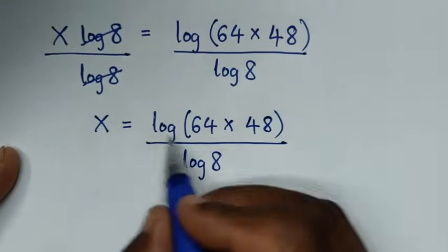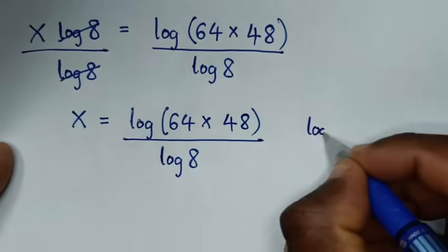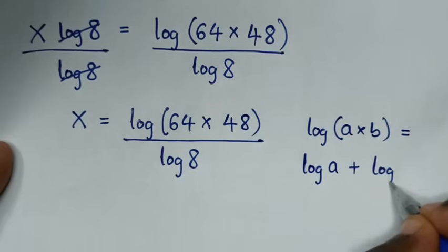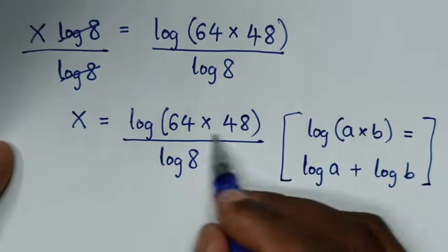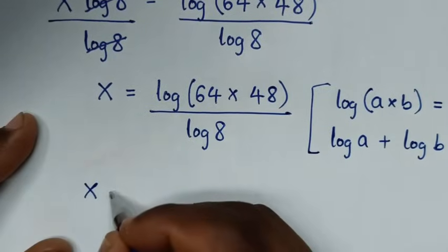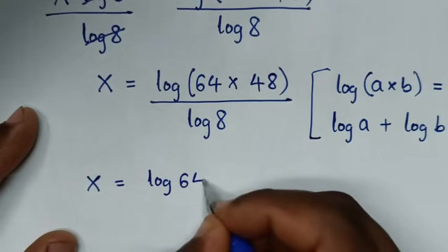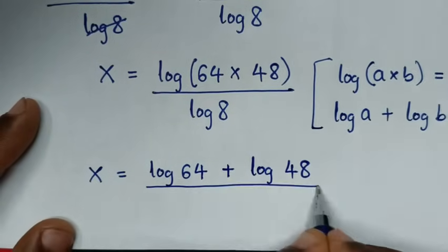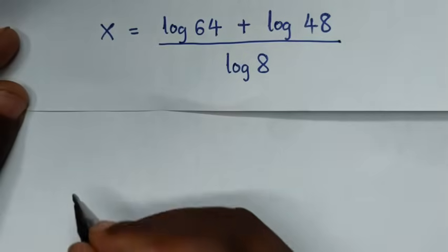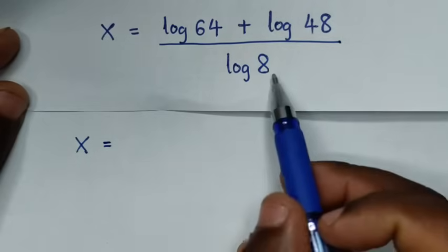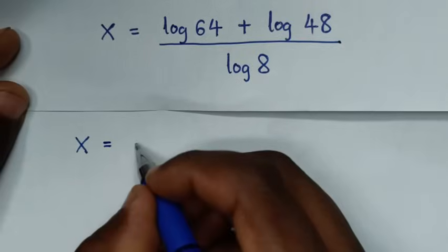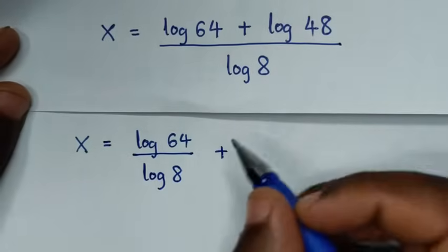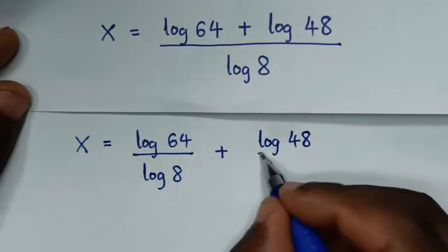In the next step, this part here is in the form of log of a times b, which is equal to log of a plus log of b. So applying this rule, it will be x is equal to log of 64 plus log of 48, all over log of 8. Then dividing each term: log of 64 over log of 8 plus log of 48 over log of 8.